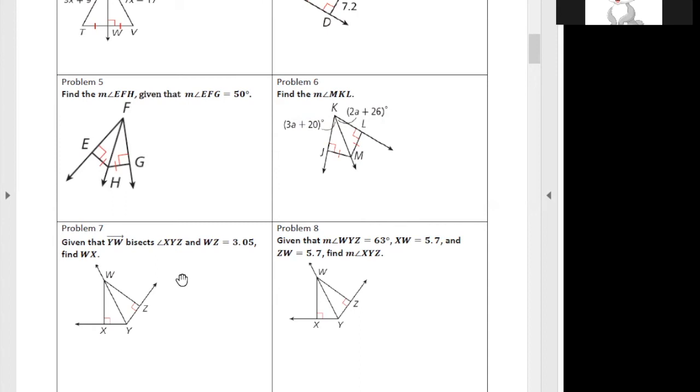It's X, Y, Z is 126. Yeah, 126. Why? Because ZW and XW are the same, so basically it's converse angle-bisector theorem. And then, since WYZ is 63, WYX is also 63 because of the angle-bisector theorem. So we can just add those two together. 63 times 2 is 126. So angle XYZ is 126. Okay, yeah.